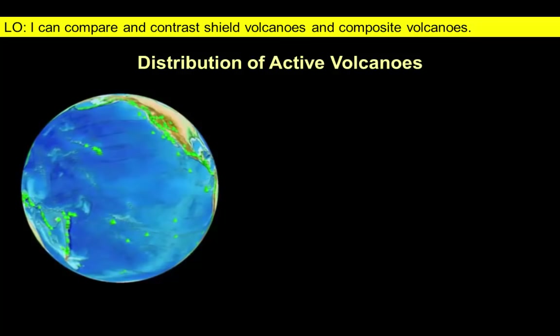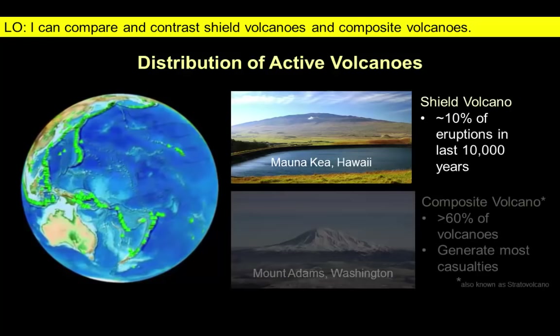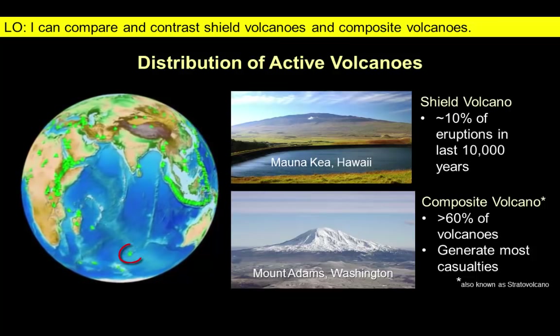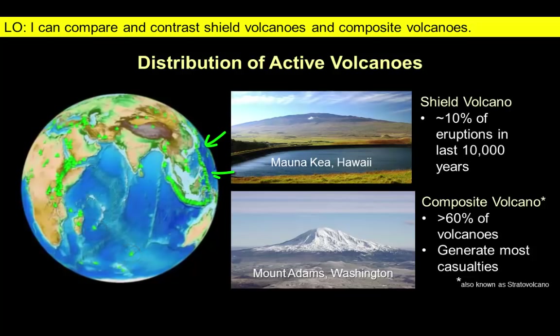We'll begin by examining the distribution of active volcanoes on Earth's surface as represented by the green triangles on this spinning globe. These are dominated by two main types of volcanoes: the gently sloping shield volcanoes and the steeper slopes of composite volcanoes. Most of those triangles near the middle of the oceans are probably shield volcanoes, which typically form in hot spots and along oceanic and continental rift systems. The line of green along the rim of the Pacific Ocean and along the southern boundary of the Eurasian Plate represents chains of composite volcanoes that form above subduction zones at convergent plate boundaries.